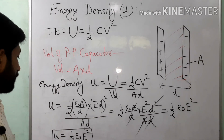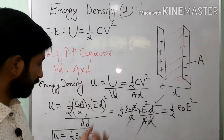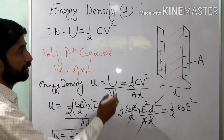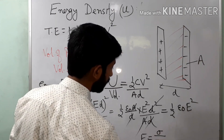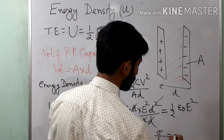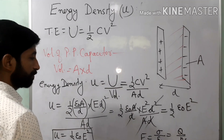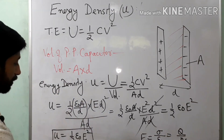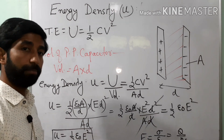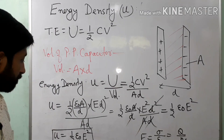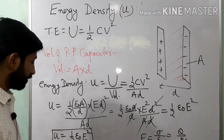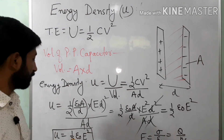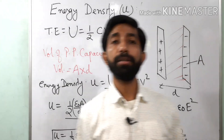So energy density depends on the permittivity of the space or medium between the two plates and the electric field. The electric field depends on the total charge on the plates, since E equals sigma over epsilon naught, where sigma is charge over area. Thus small u depends on the charge Q and the electric field. This is the electrostatic energy density — it will be relevant even in chapter 8 when discussing electromagnetic waves. This is the energy stored per unit volume in the space between the plates when the medium is vacuum.